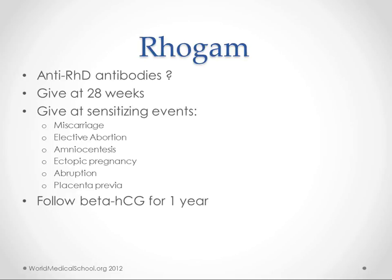So when do we give this? We give it at 28 weeks, just as a prophylaxis. We also give it at any sensitizing event — any event which would involve fetal blood meeting maternal blood. This would happen in miscarriage, elective abortions, amniocentesis, ectopic pregnancies, abruption and placenta previa. And just normal birth — so we give this at birth as well as at 28 weeks.